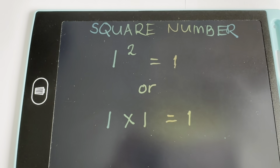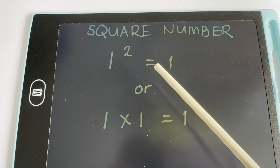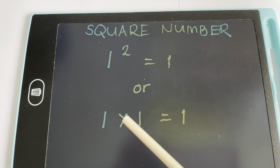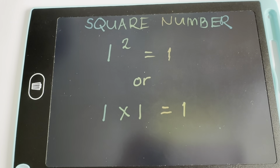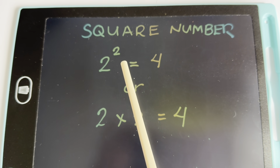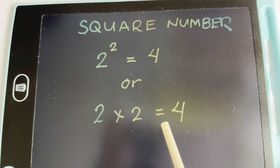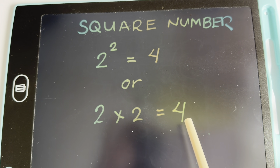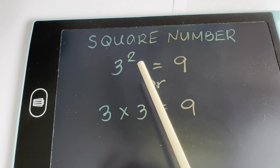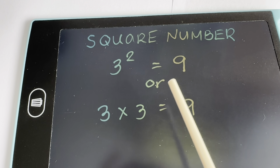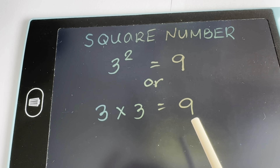Let's learn square numbers. Let's begin. 1 squared is equals to 1, or 1 times 1 is equals to 1. 2 squared is equals to 4, or 2 times 2 is equals to 4. 3 squared is equals to 9, or 3 times 3 is equals to 9.